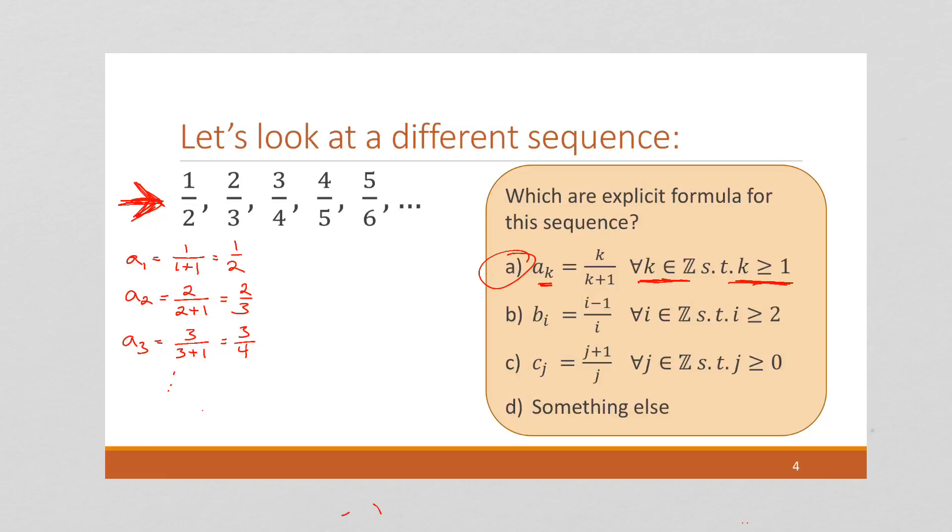But what's tricky is, is if we go to look at this next one, this B sub I, notice here we start at I greater than or equal to 2. Let's try that. So we have B of 2 equals 2 minus 1 over 2 is 1 half. And now for B of 3, we've got 3 minus 1 over 2 is, over 3 equals 2 thirds. And when B of 4 is going to be 4 minus 1 over 4 is 3 fourths, which again matches our sequence. So this is another explicit formula.